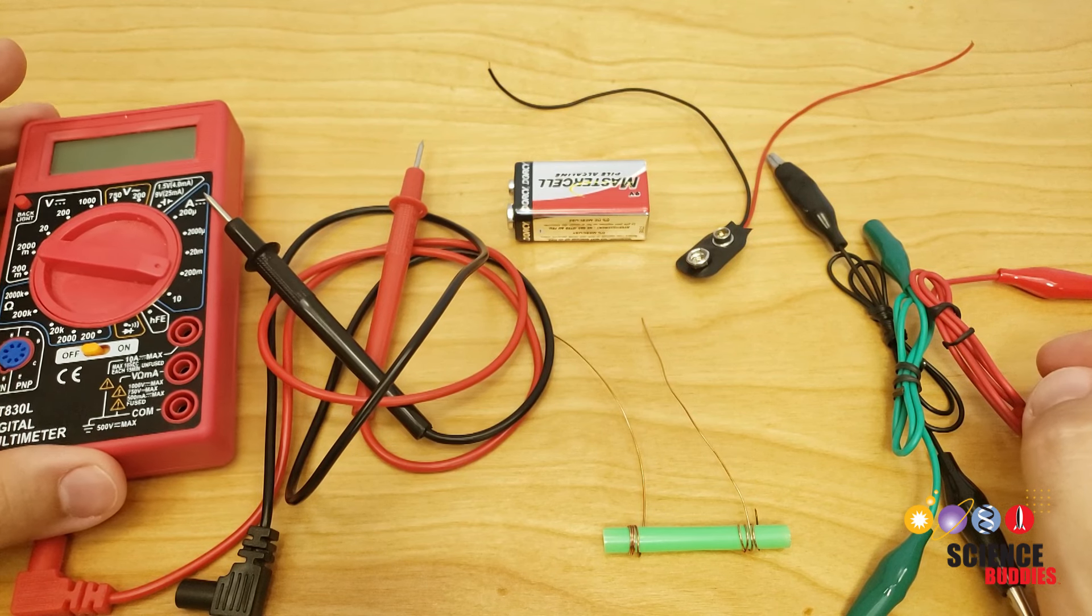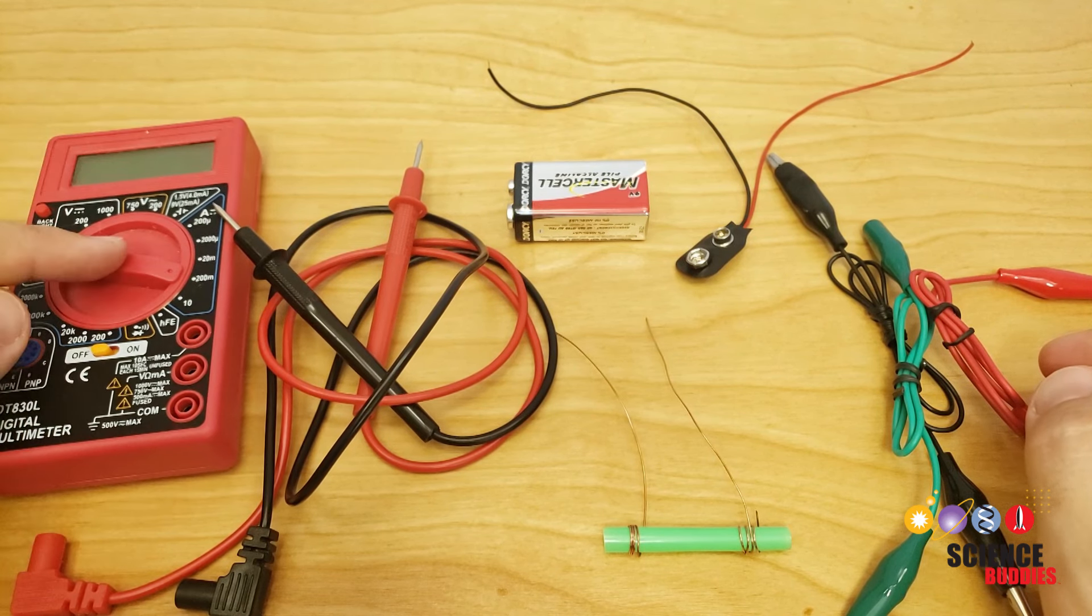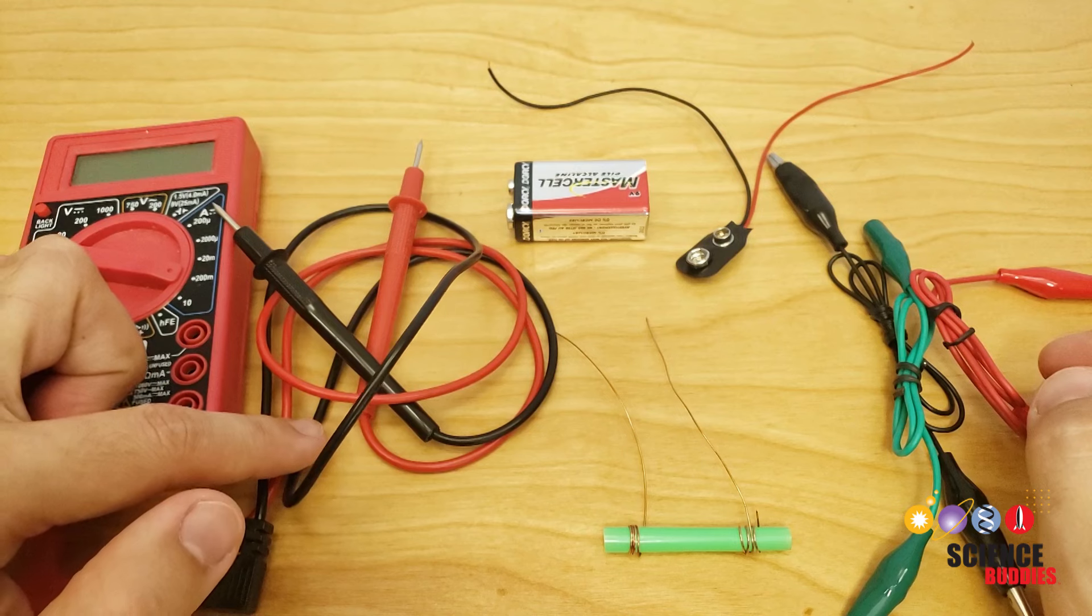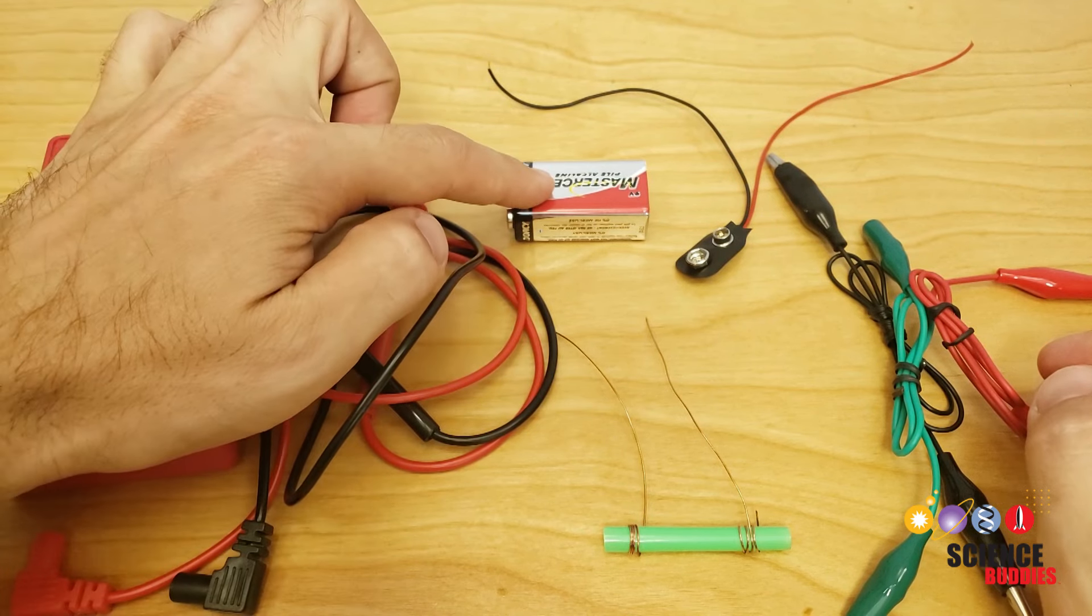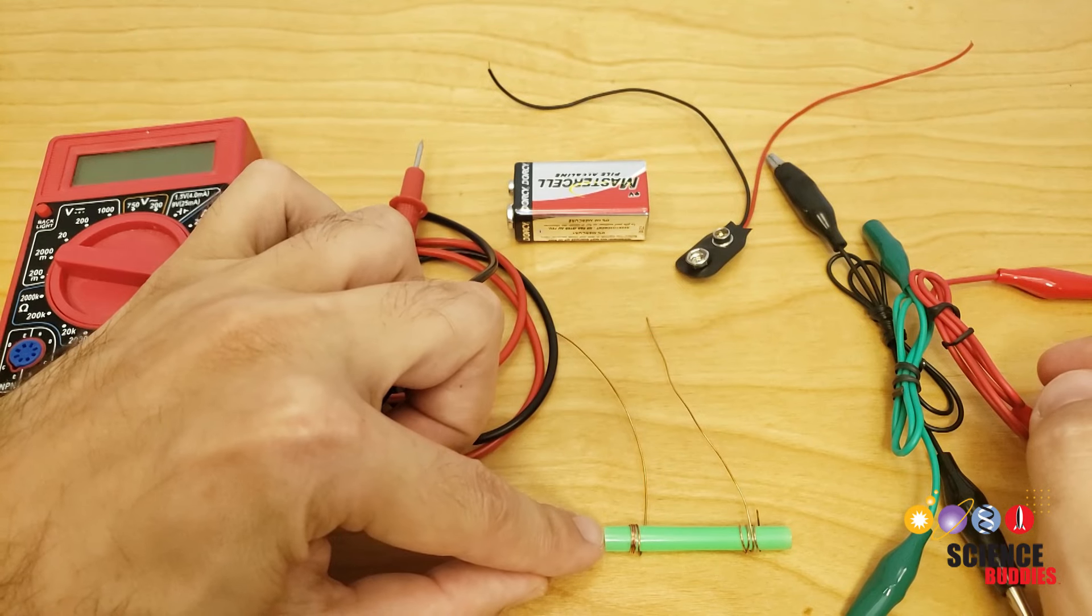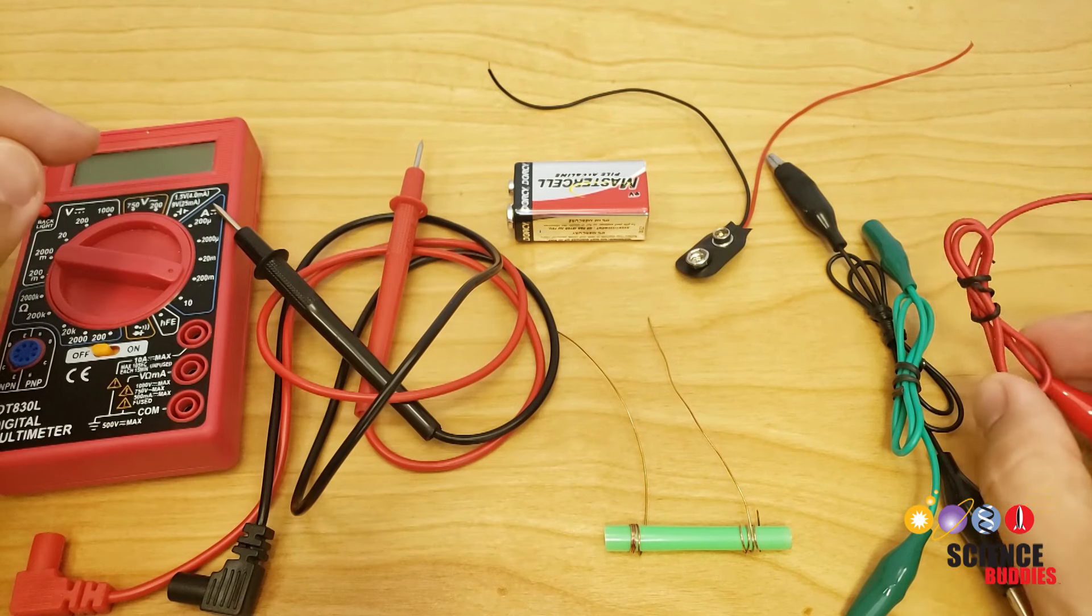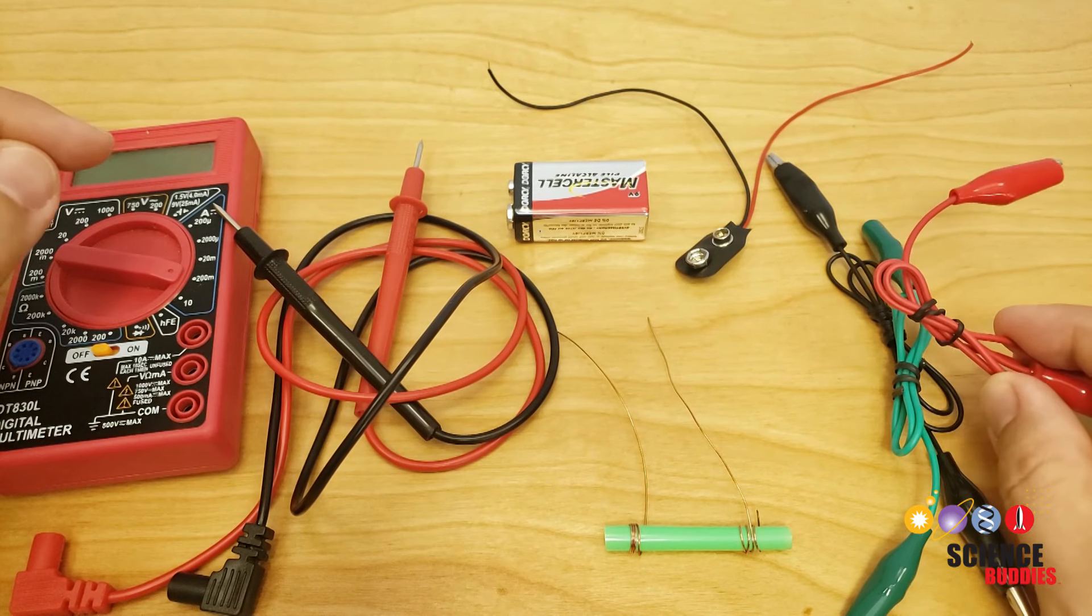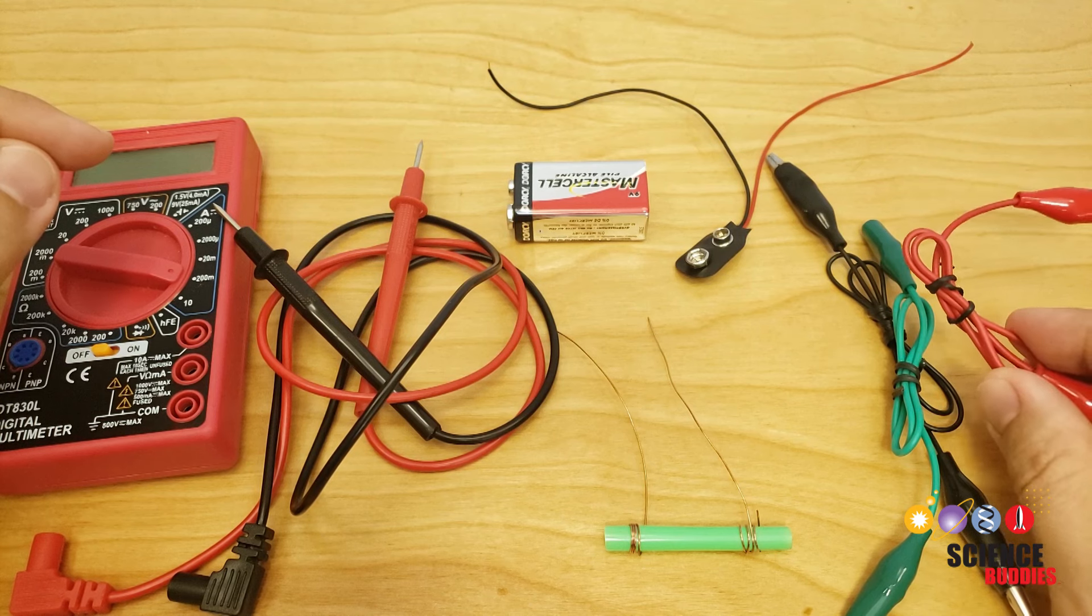Next, it is time to set up your circuit. Here are all the parts you will need: the multimeter, the two multimeter probes, the 9-volt battery, the 9-volt battery snap connector, the conductance sensor that you just made, and the three alligator clips from your kit. Note that the colors of these clips may vary. That is okay.